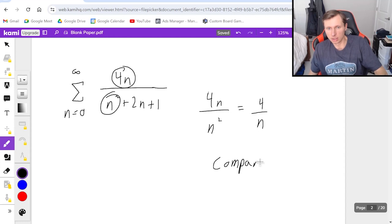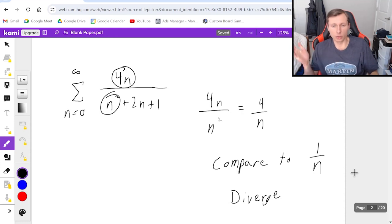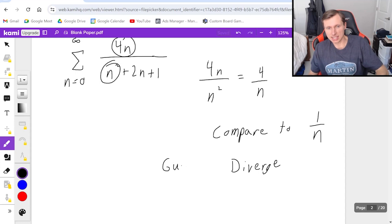You should compare to, I mean, I don't have to do 4 over n, I can just do 1 over n, but I know this series is going to diverge, because it's the harmonic series, or it's a p series where p equals 1. So either way, I know it's going to diverge. That's going to be my guess. My guess is going to be diverges for this one.